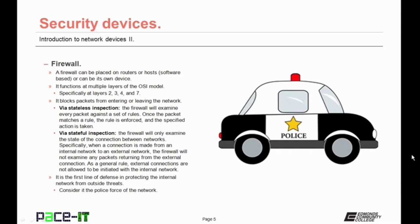It can do it through stateless inspection, in which the firewall will examine every packet that enters or leaves the network against a set of rules. Once the packet matches a rule, the rule is enforced and the specified action is taken. Or it may use stateful inspection — when a firewall will only examine the state of a connection between networks. Specifically, when a connection is made from an internal network to an external network, the firewall will not examine any packets returning from the external connection. It only cares about the state of the connection.